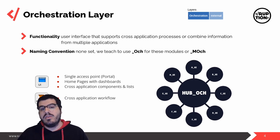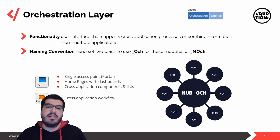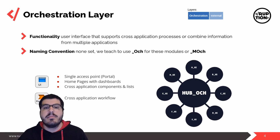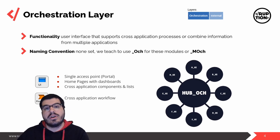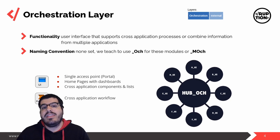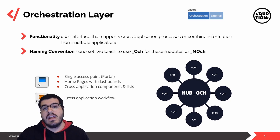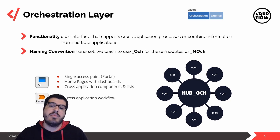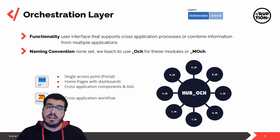If you take a look at it, you can have access to applications B, C, D, E, and F from your point A, which is your terminal and your orchestration module. In terms of naming conventions, OutSystems hasn't set anything in stone, but we usually like to use underscore OCH and underscore MOCH for the modules created in this layer.